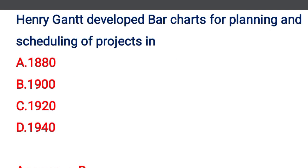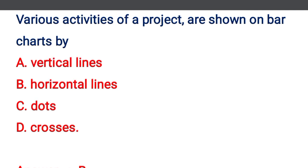Next question: Henry Gantt developed a bar chart for planning and scheduling of a project in — option A: 1880, option B: 1900, option C: 1920, option D: 1940. The correct answer is option B: 1900.